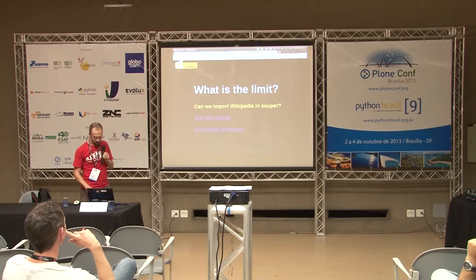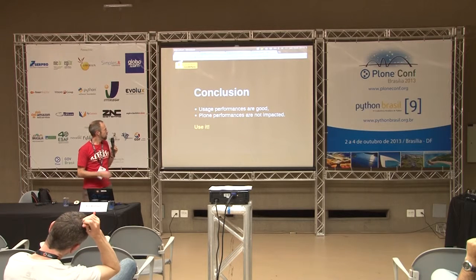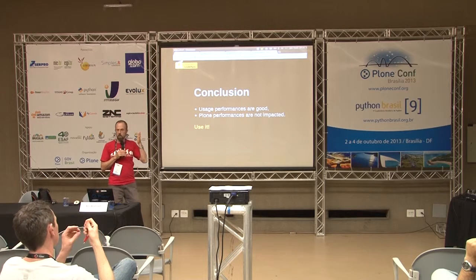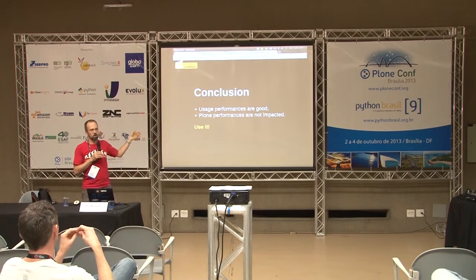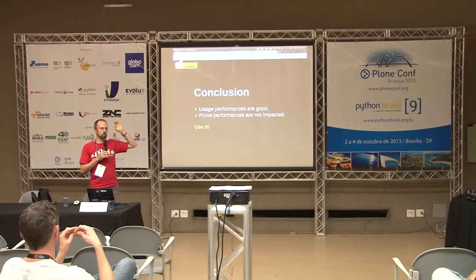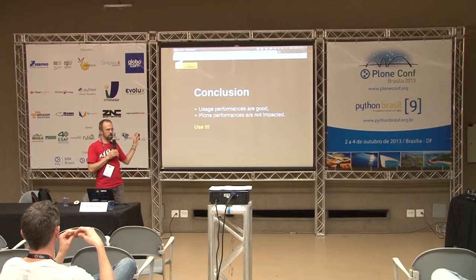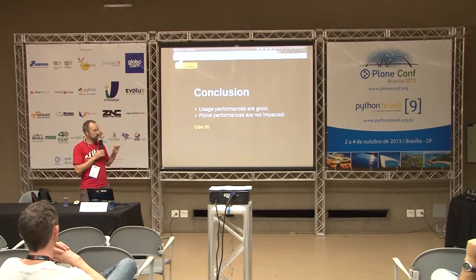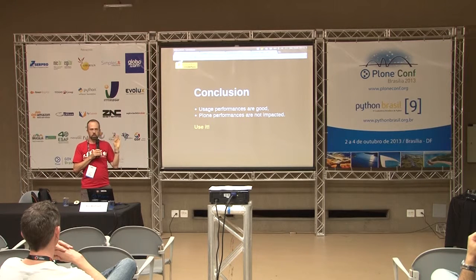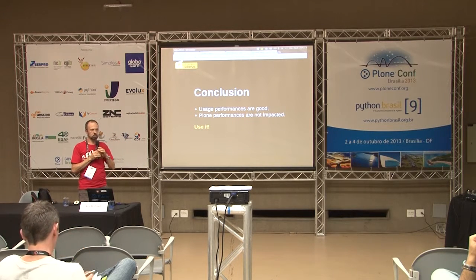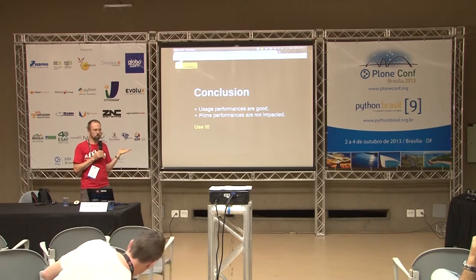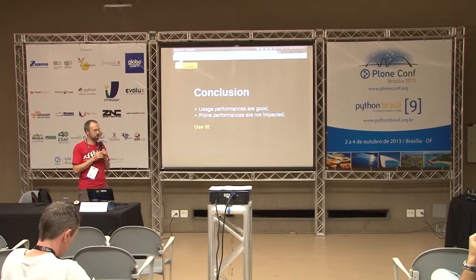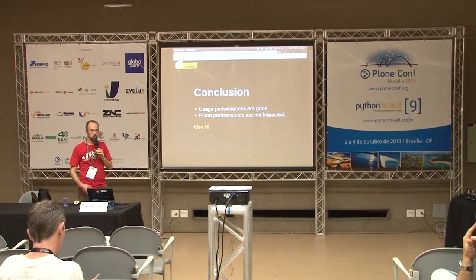So, let's move back to the presentation. My conclusion: the usage performances are acceptable — very good for, let's say, a million entries, no problem. They are specifically good with tiny records. With Wikipedia, records were kind of big compared to addresses, so the performance was not that good, but it's usable. And Plone performance is totally not impacted. You can put this kind of big database into a Plone site and it will make no change for the rest of your Plone features. So, use Soup — it's just fantastic. Really easy to use, really easy to install.